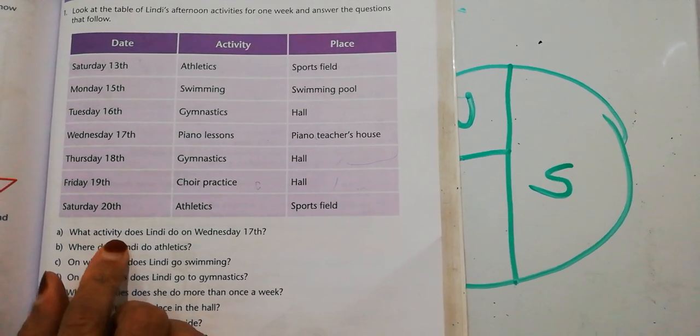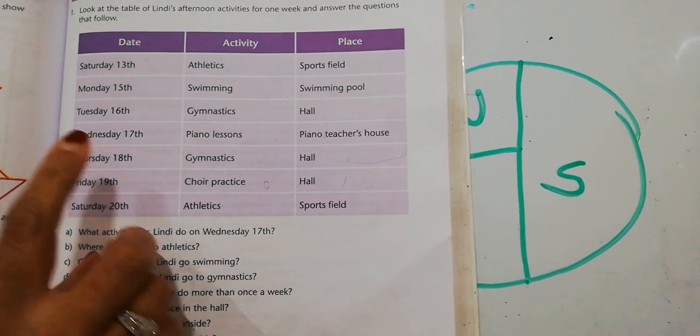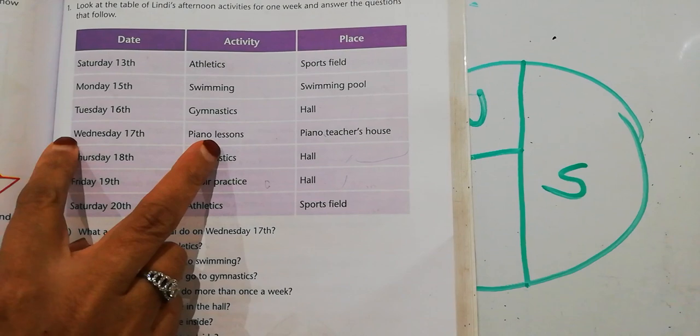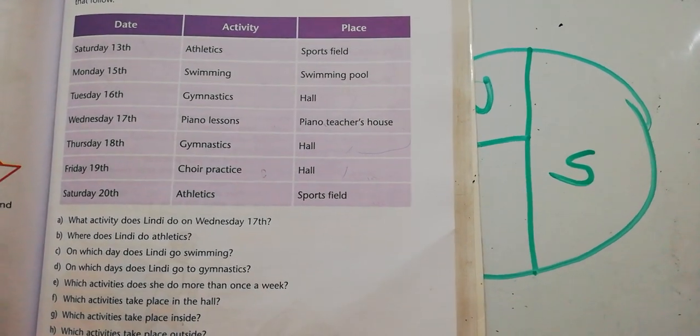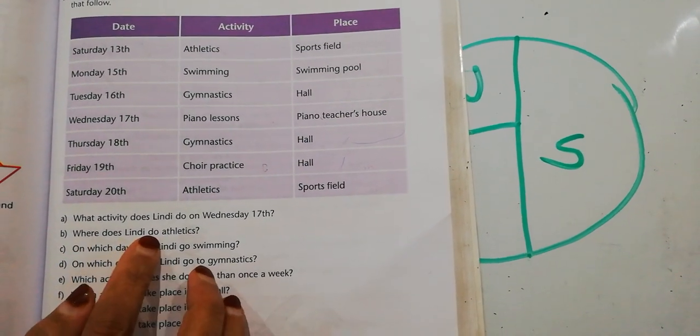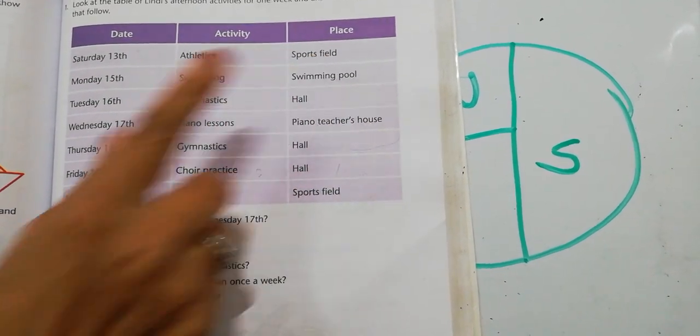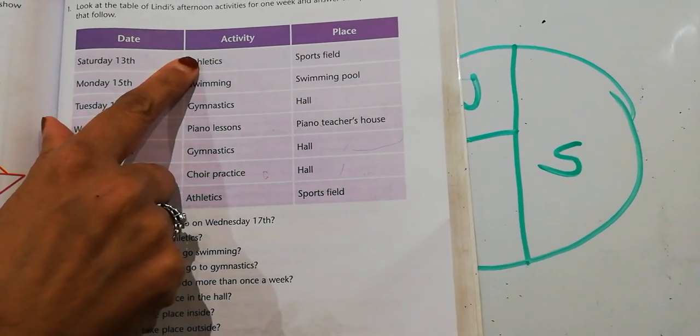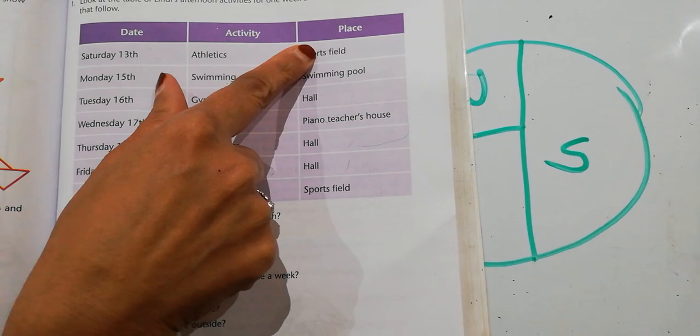So it says, look at the table of Lundy's afternoon activities for one week and answer the questions that follow. It gives a date, it gives an activity, and it gives a place. So we must be able to look at this table and be able to answer questions about this table. It's called analyzing information. So it says, what activity does Lundy do on awareness day? So I'm going to go to awareness day, I'm going to go to activity and see what does she do. Where does Lundy do athletics? A place. Where is a place? So I'm going to go to athletics and where does she do it.